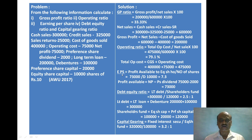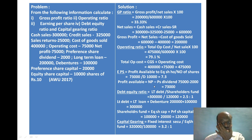Next, EPS (Earning Per Share). Formula: profit available to equity shareholders divided by number of equity shares. Number of equity shares = 10,000. Profit available to equity shareholders = net profit Rs. 75,000 minus preference dividend Rs. 2,000 = Rs. 73,000. EPS = Rs. 73,000 divided by 10,000.